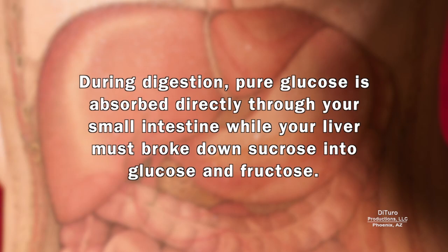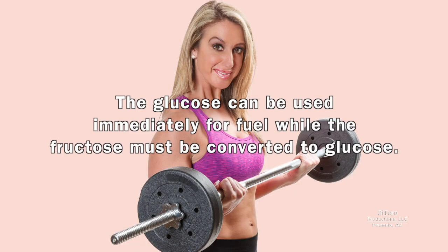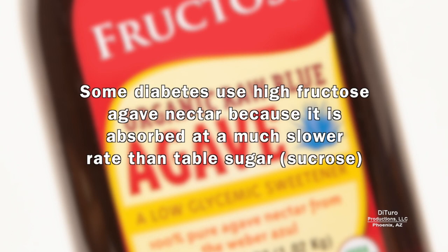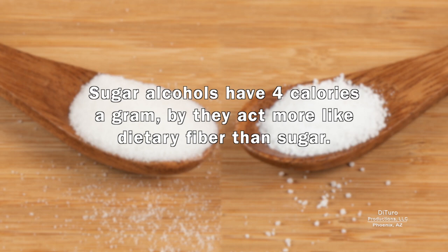During digestion, pure glucose is absorbed directly through your small intestine, while your liver must break down sucrose into glucose and fructose. Your body can use the glucose immediately for fuel, while the fructose must be converted to glucose. Some diabetics use high-fructose agave nectar because it is absorbed at a much slower rate than table sugar. Unlike sugar that is totally absorbed, sugar alcohol calorie absorption ranges from near zero up to 50% of calories.